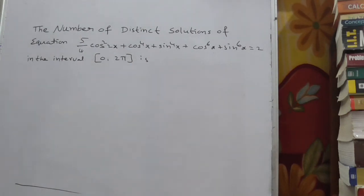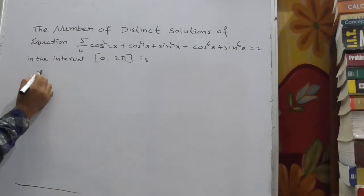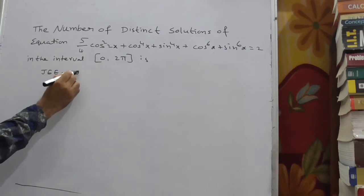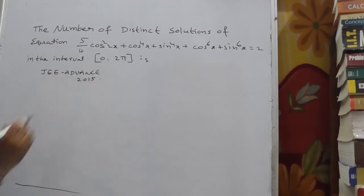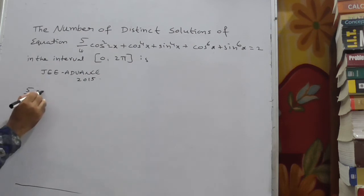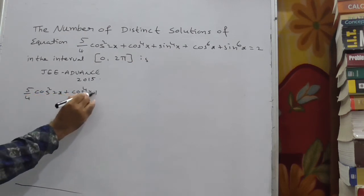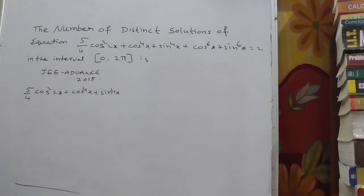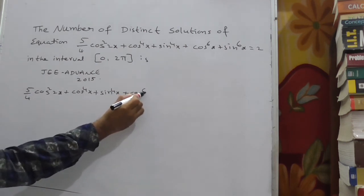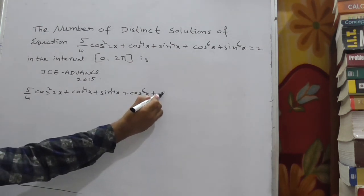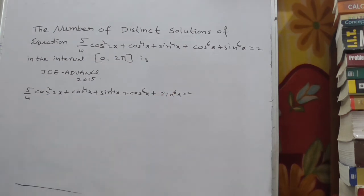The number of distinct solutions of the equation: (5/4)cos²(2x) + cos⁴x + sin⁴x + cos⁶x + sin⁶x = 2. This is an IIT JEE Advanced 2015 question.